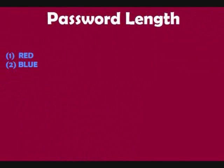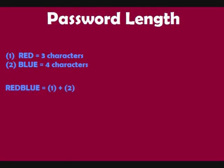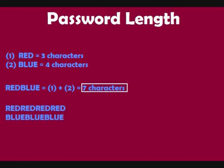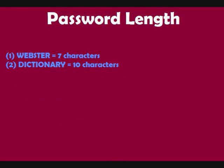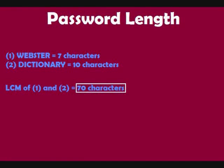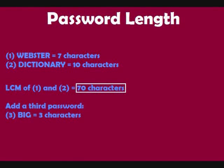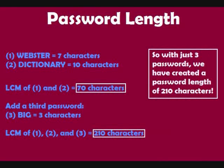I'll explain how that works. If we take our two passwords, 'red' and 'blue,' they are 3 and 4 characters long respectively. When we combine them by putting them next to each other, we get a password length equal to the sum of their individual lengths — 3 plus 4 is 7. However, when we double code them, we yield a total password length equal to the least common multiple, or LCM, of the two individual lengths. The LCM of 3 and 4 is 12. This might not seem like a huge difference, but with longer passwords like 'Webster' and 'Dictionary,' adding their lengths gives just 17, whereas double coding gives a total password length of 70. Add a third password, 'big,' and the LCM of all three gives a total password length of 210. Obviously this gets very big very fast, and that's why I like this method so much.